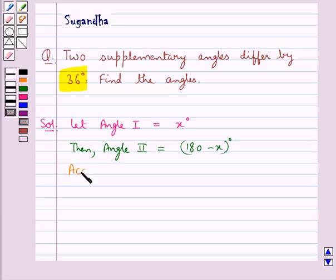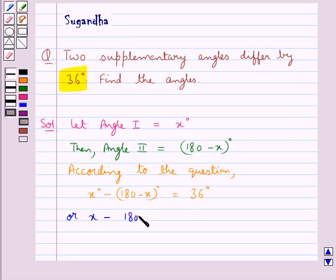According to the question, these two supplementary angles differ by 36 degrees, so we write: x degrees minus (180 - x) degrees equals 36 degrees. That means x - 180 - x = 36.